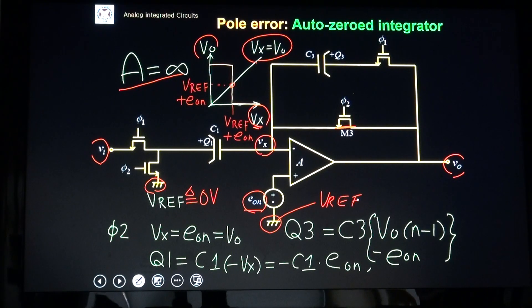Let's look at how the offset compensation occurs here. During φ2, C1 samples. During φ2, this Vx becomes EON. Also, VO is also EON. Then, C1 samples input offset voltage. Q1 is C1 minus Vx, which is C1 EON. This is a Q1 charge.